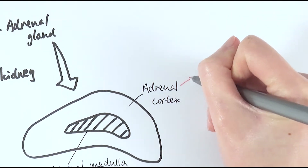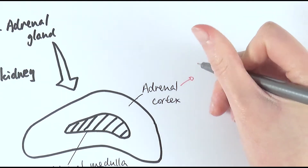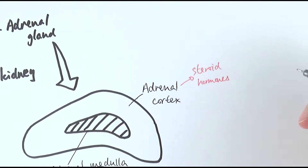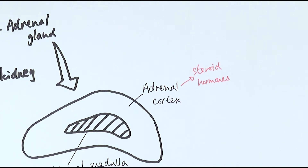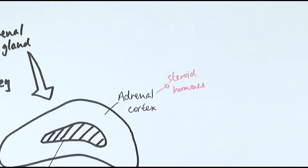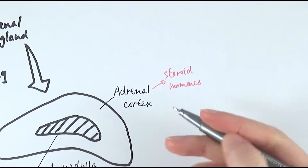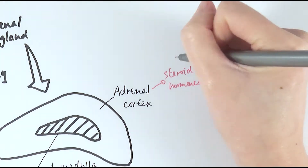Specifically, the adrenal cortex releases steroid hormones. As discussed previously, steroid hormones are lipid-based and are able to diffuse across the cell surface membrane by simple diffusion. There are three general types of steroid hormones that you need to know about, released by the adrenal cortex.